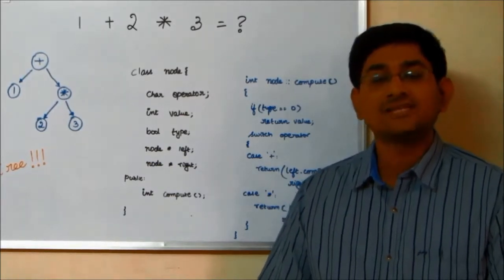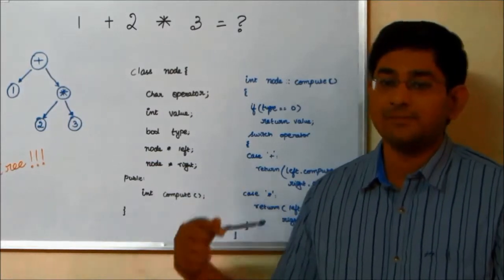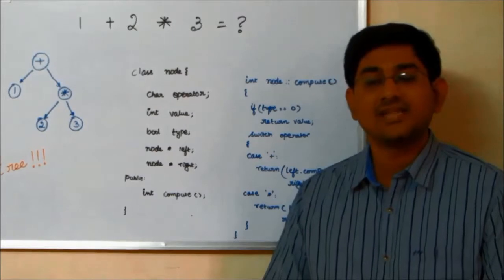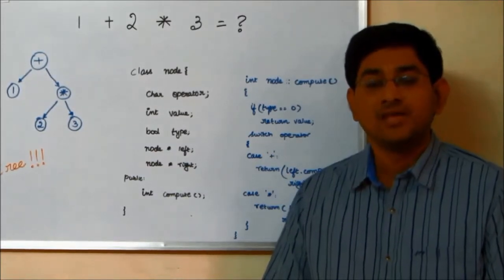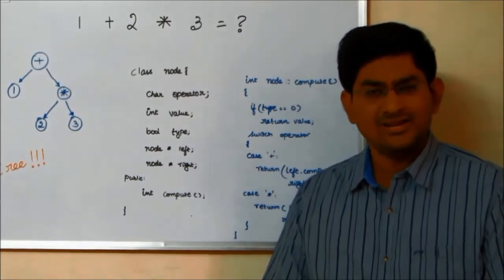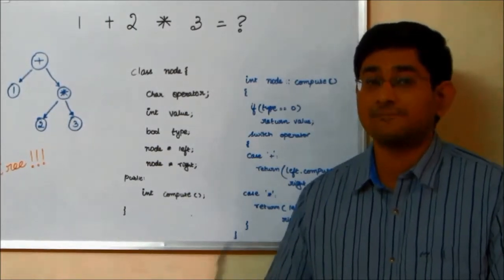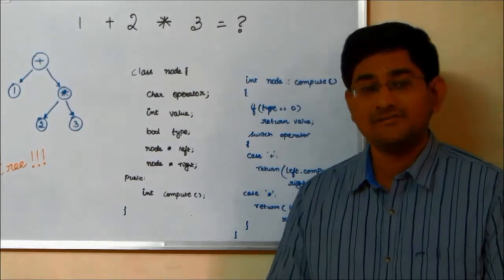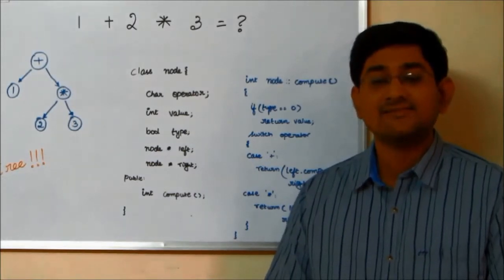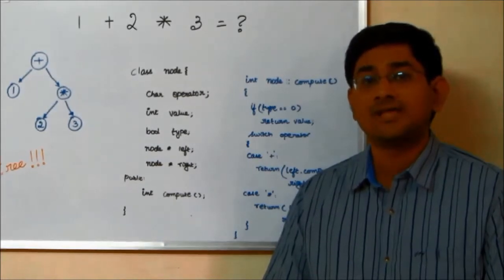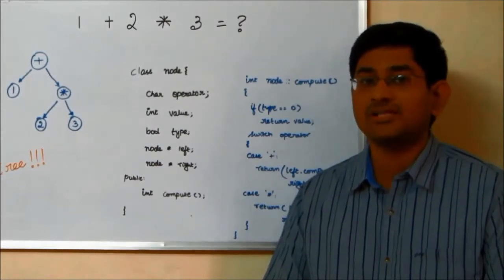Going further, we can split the operator node into multiplication node and addition node. And the compute in those classes can do their job efficiently. This may look like an overkill but adding a new function or an operation like dump object or subtraction or division becomes easier with this kind of proper class writing. The maintenance of the code becomes all the more easier.